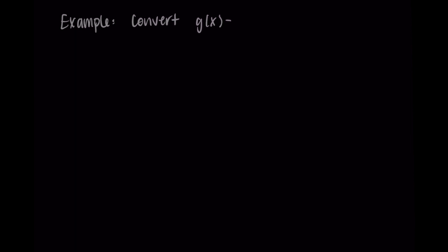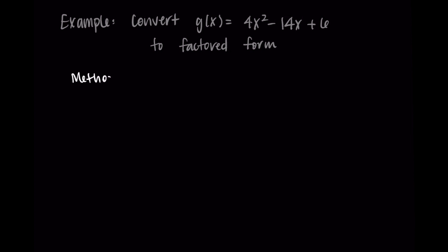There are so many examples we could do with this, but I just want to show you one more in this video. Let's convert g of x equals 4x squared minus 14x plus six into factored form. I like to start with method one and attempt to factor this by hand.